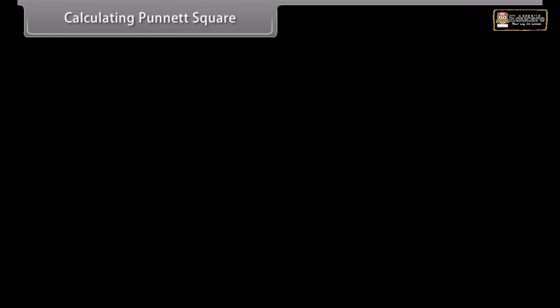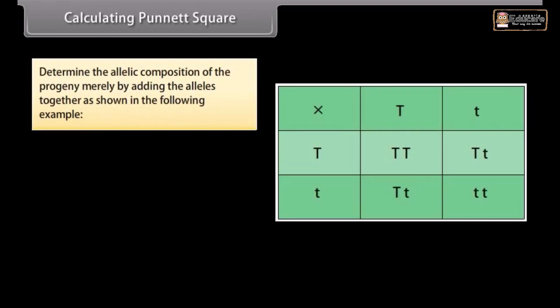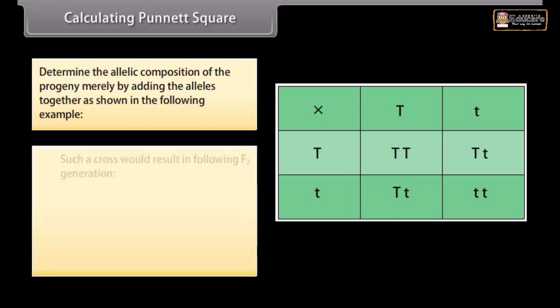Calculating Punnett square. Determine the allelic composition of the progeny merely by adding the alleles together as shown in the following example. Such a cross would result in following F2 generation.